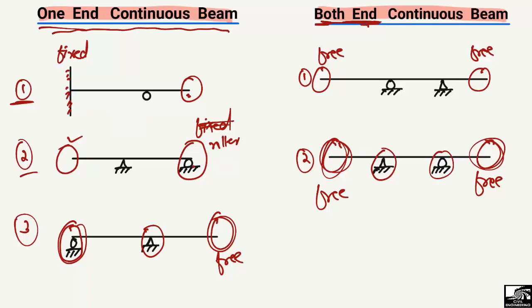So I hope you guys understood the main difference between the one-end continuous and both-end continuous beam. In the one-end continuous beam, one end is always supported while the other end is free. In the both-end continuous beam, both ends are free — that's why they are known as both-end continuous beams.